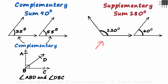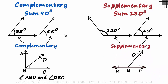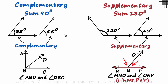Here's another pair of angles. 120 plus 60 is 180 degrees, which makes them supplementary. In this figure, line MP is a straight line, and angle MNO and angle ONP are supplementary. Notice that these two angles are supplementary as well as adjacent. Adjacent angles which are supplementary form something called a linear pair — the two adjacent angles form a line.